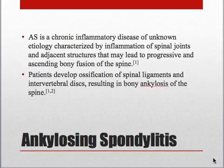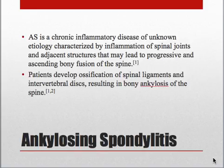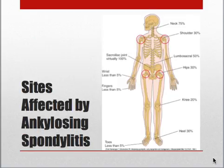AS is a chronic inflammatory disease of unknown etiology characterized by inflammation of spinal joints and adjacent structures that may lead to progressive and ascending bony fusion of the spine. Patients develop ossification of spinal ligaments and intervertebral discs resulting in bony ankylosis. It is important to note that AS generally starts in the SI region and moves proximally and superiorly up the spine.